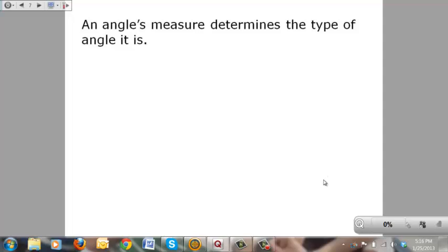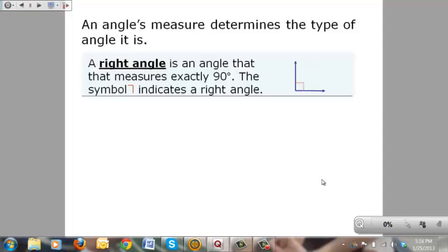An angle's measure determines the type of angle it is. For example, a right angle is exactly 90 degrees, and you notice it's indicated with a little red right angle in the corner of it that's located right here. That indicates it is a right angle.